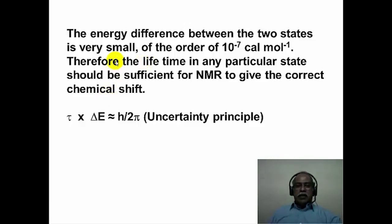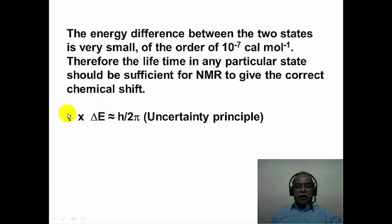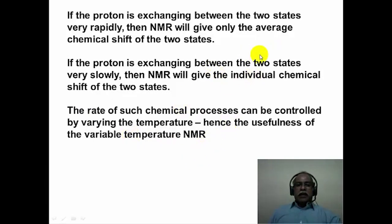The difference in energy between the two states of residence is very small — on the order of micro calories per mole. Therefore the lifetime in any particular state must be sufficiently long in the NMR timescale to give the correct chemical shift value. The uncertainty principle, expressed in terms of residence time and the energy difference between two states, means there can be large uncertainty in the energy state depending upon the lifetime. If the proton exchanges between the two states very rapidly, NMR will see only an average chemical shift value, though the signal can still be very sharp.